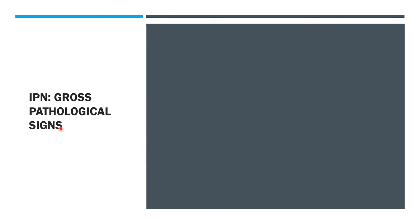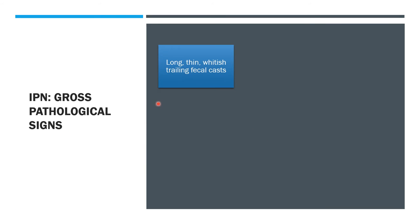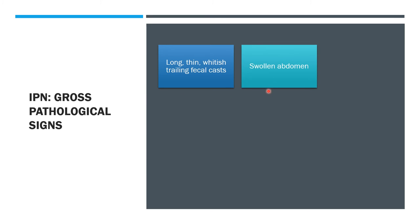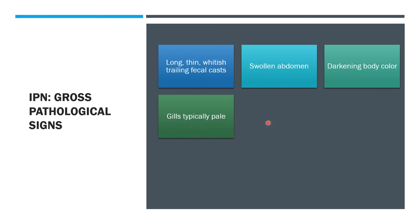For the gross pathological signs, there is a long, thin, whitish trailing fecal cast, swollen abdomen, and darkening of the body color. The gills are typically pale.